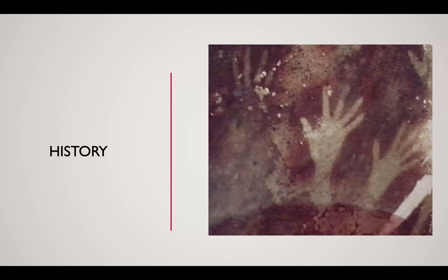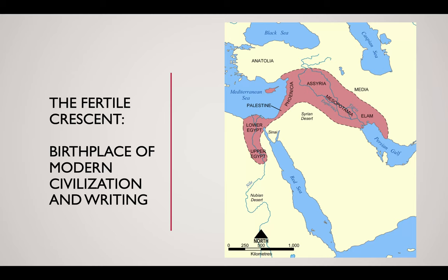The Fertile Crescent lies between the Mediterranean shores of southern Turkey and the Nile Delta of modern-day Egypt, over to the Persian Gulf in the southeast. These rich agricultural areas boast the earliest known continuous human settlement, where we see the emergence of early forms of architecture and writing.